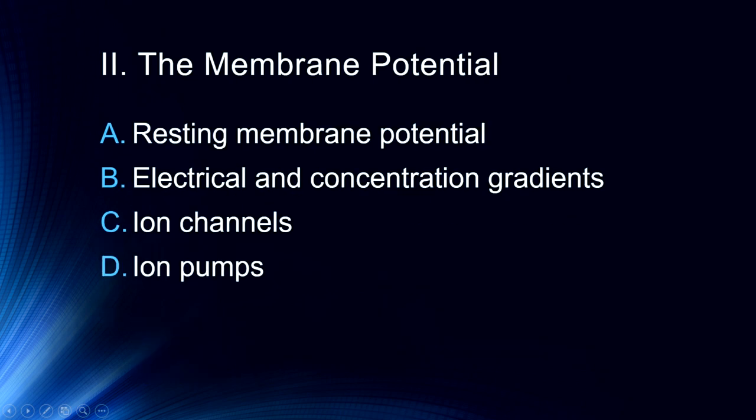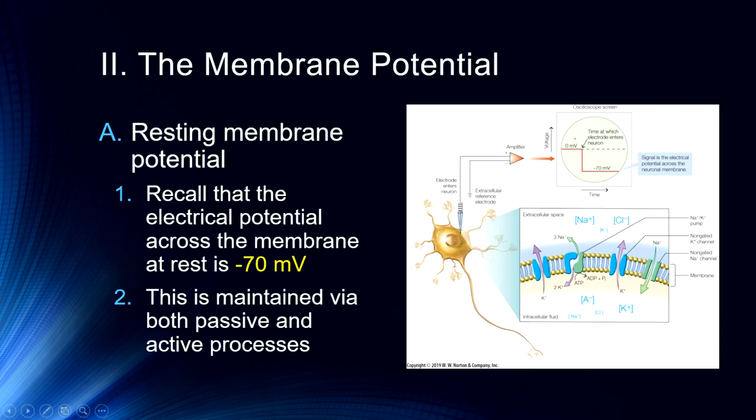The resting membrane potential is an electrical difference between the inside and the outside of the cell. We'll talk about how electrical and concentration gradients influence this process, and cover ion channels and ion pumps. The resting membrane potential across the membrane at rest is negative 70 millivolts, meaning the inside of the cell is negative 70 millivolts compared to the outside. This is very much like a battery — it's stored energy — and it is maintained by both passive and active processes.